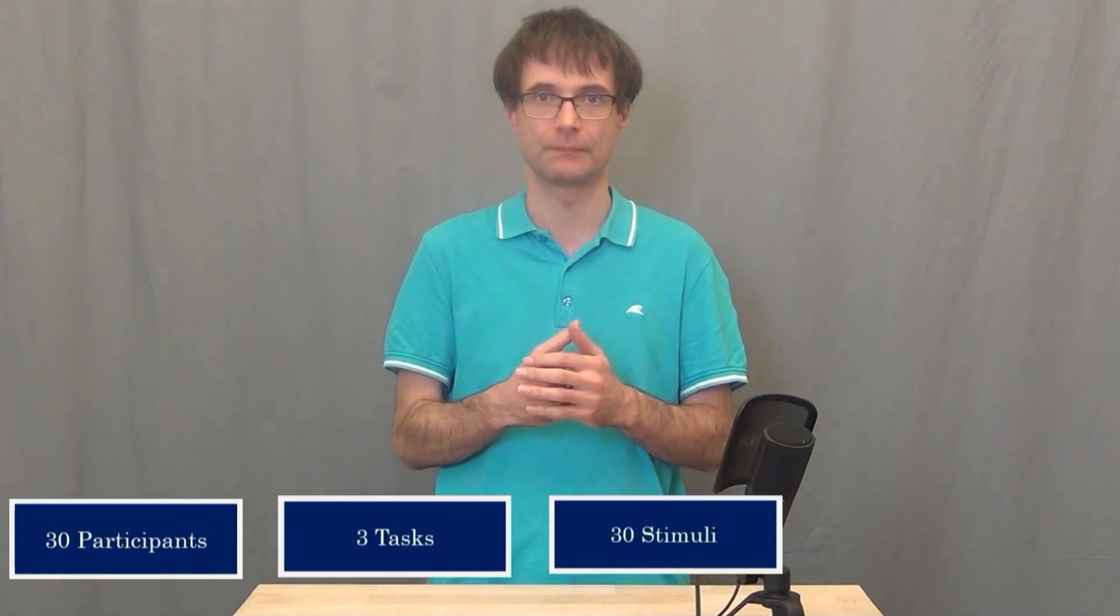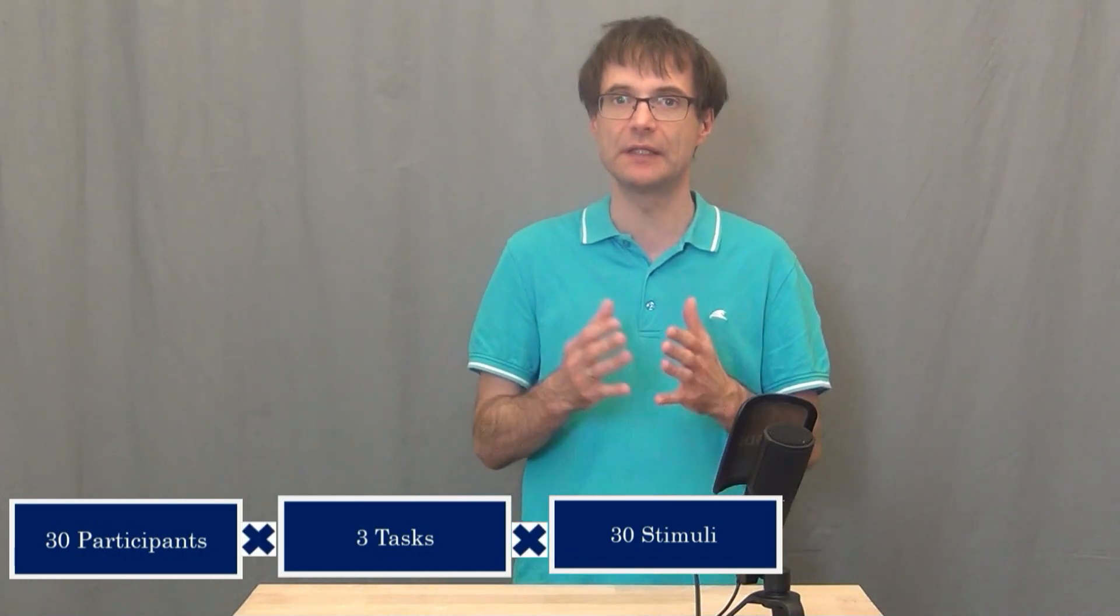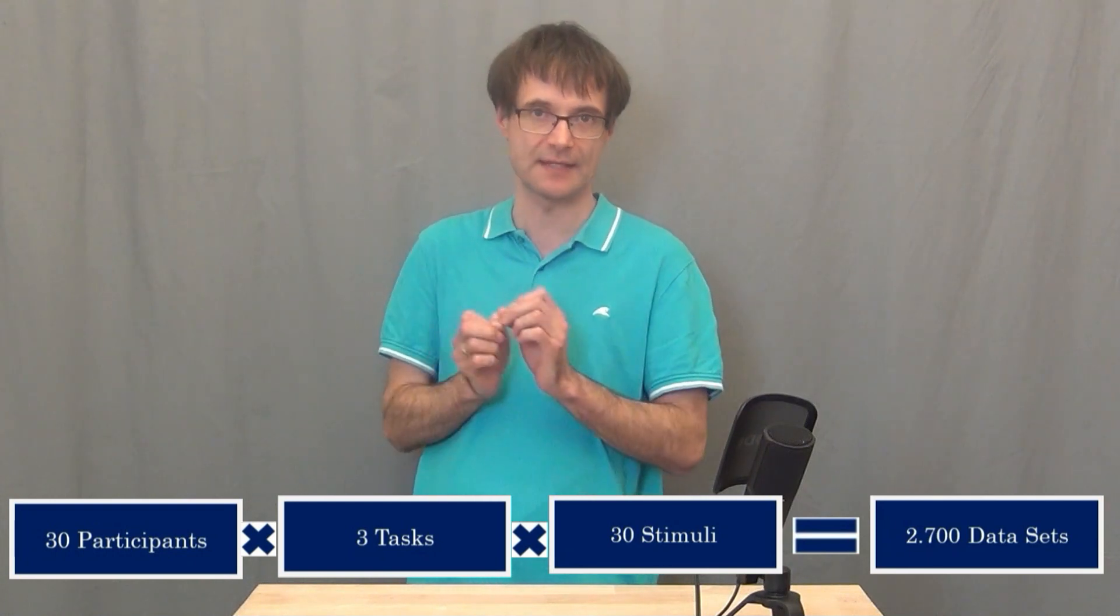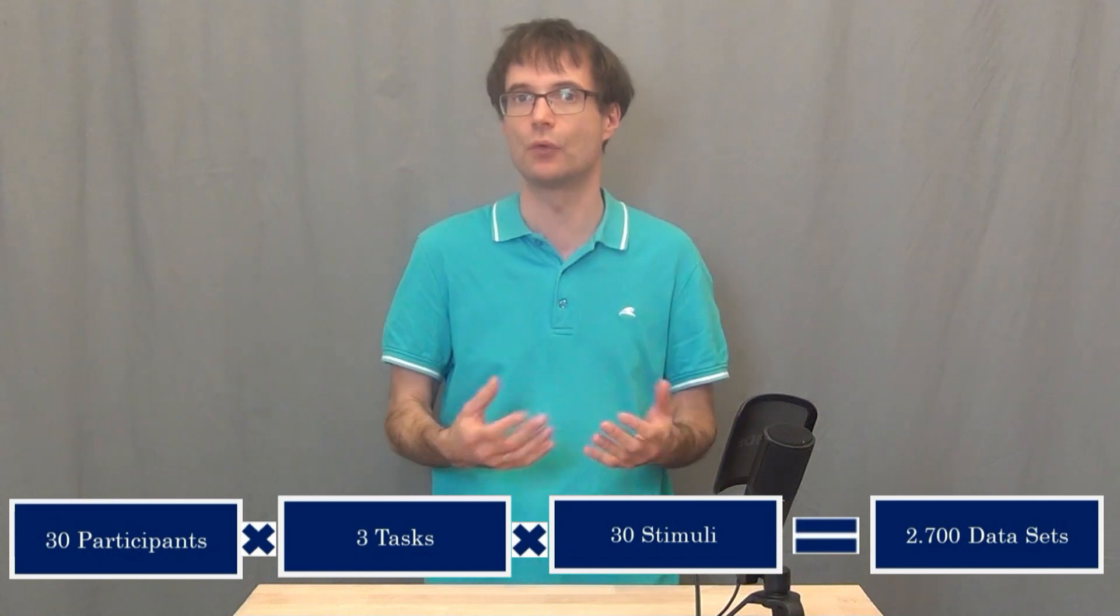Then you could say, okay, I invite now 30 participants. I will show them in three task blocks, 30 stimuli each. And if you multiply all these numbers, this will lead to 2,700 single data sets or scan paths, which you have to record during your eye tracking experiment. And when you're now measuring how much time you need for presenting these single stimuli, you will get the overall time for recording the eye movements. And then you have to add the introduction as well as when you're saying goodbye and farewell to your participants. And this is then the overall time for the whole experiment together with setting up and then with shutting down the, for example, eye tracking hardware.